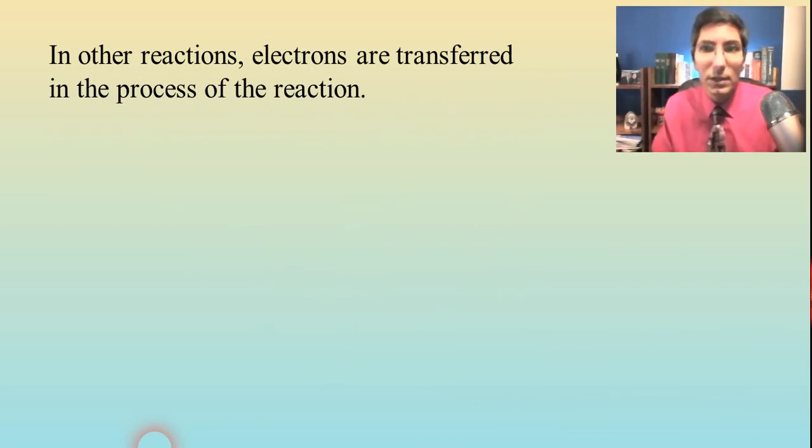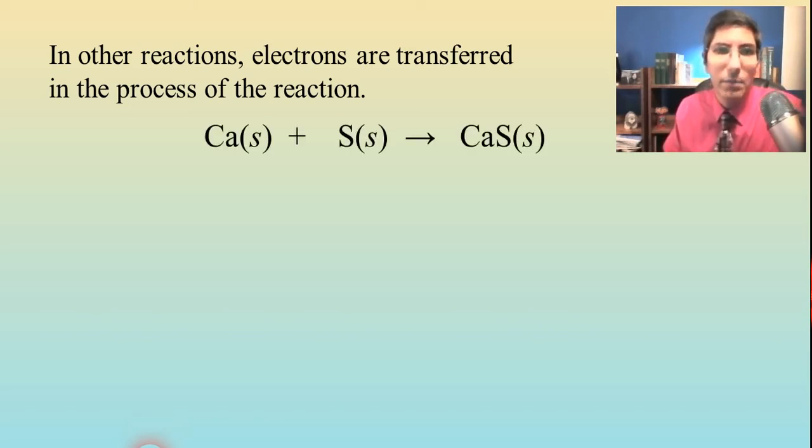Well, starting in this lesson, we're going to be learning about how electrons can actually be transferred through the process of the reaction. So here's how that might take place. Here's an example where we have calcium metal that's reacting with solid sulfur to make calcium sulfide.